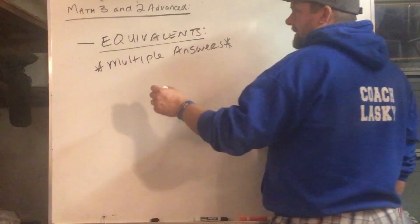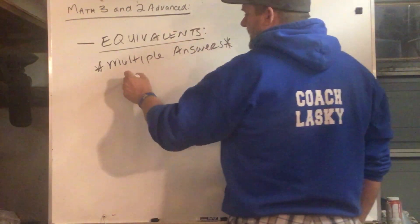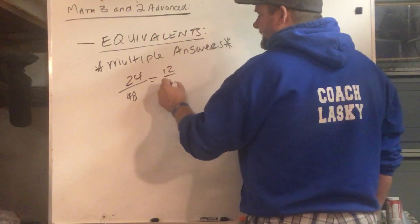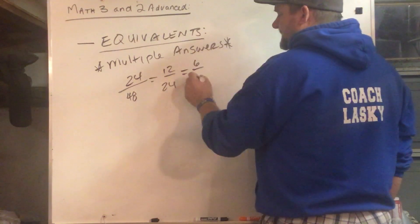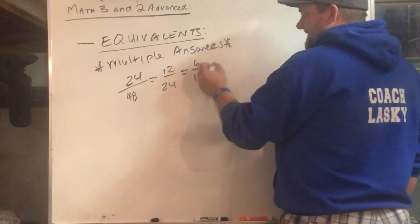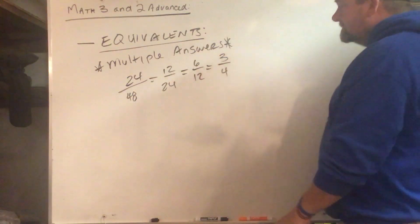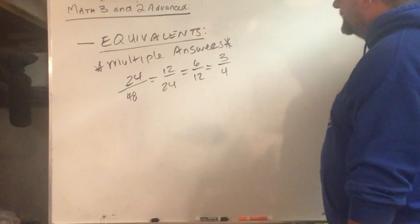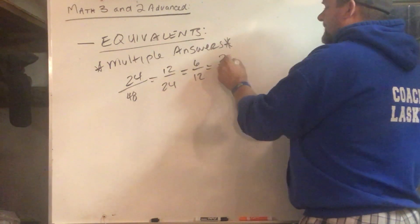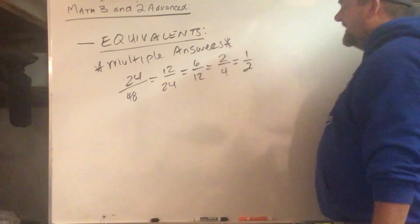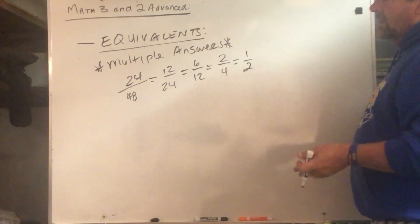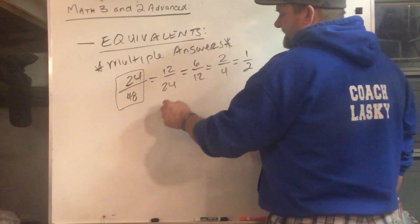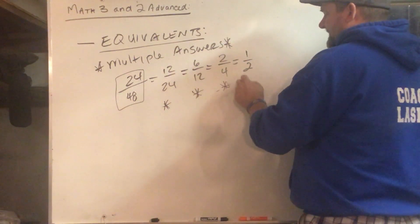Let's do something larger like 24/48. If we divide that by 2 we get 12/24. Divide that by 2 we get 6/12. Divide that by 2 we get 3/4, then one half. So if they give you this and they say find all the equivalents, these are all possible equivalents here.